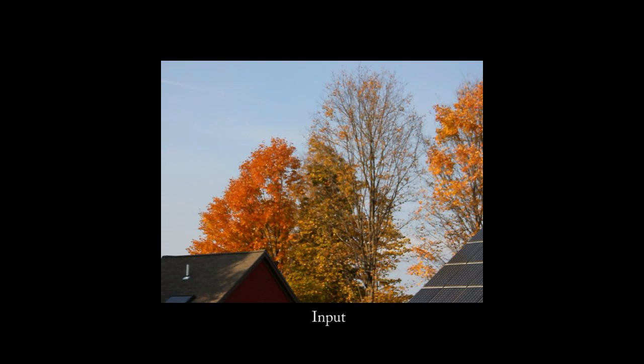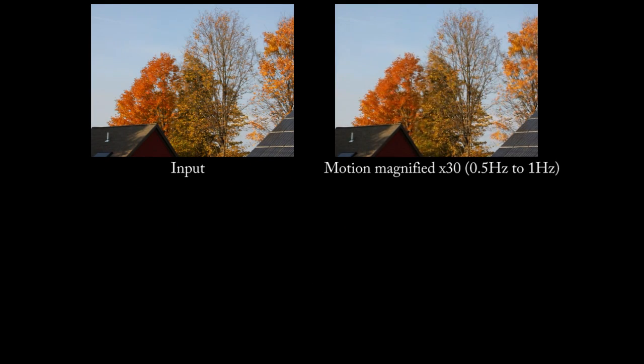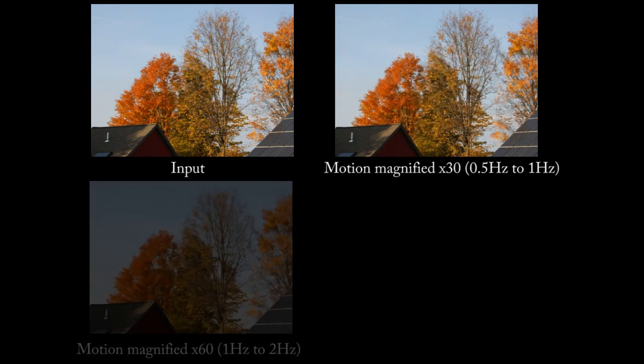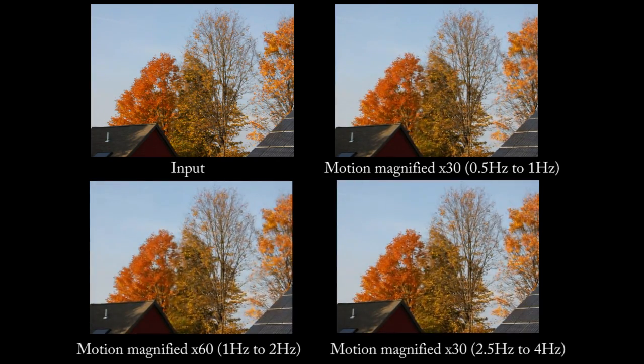Ordinary videos hide subtle changes at different temporal frequencies. In this video, the low frequencies contain the swaying of the trunk. At mid-range frequencies, we see the motions of the branches. At high frequencies, the motion of the leaves is most visible.